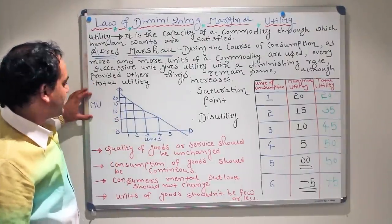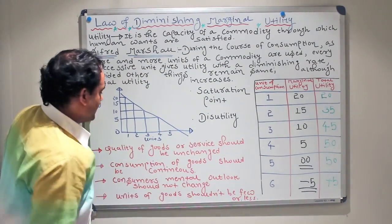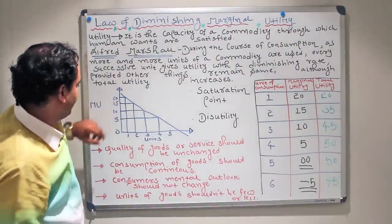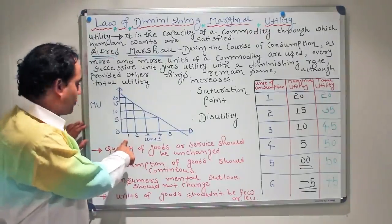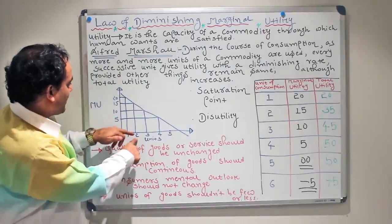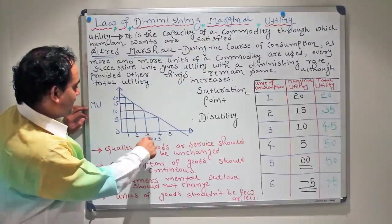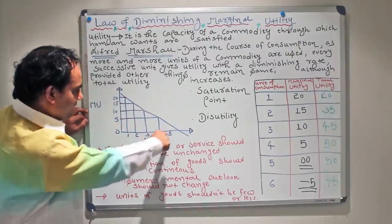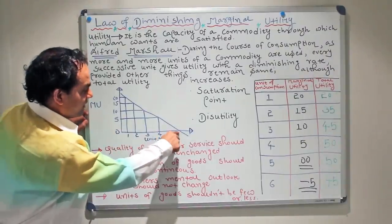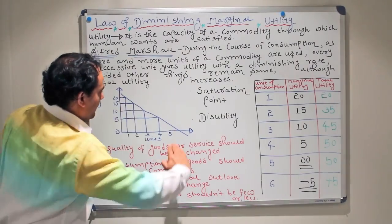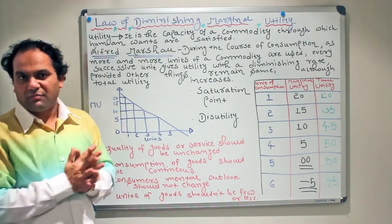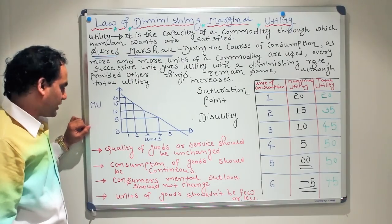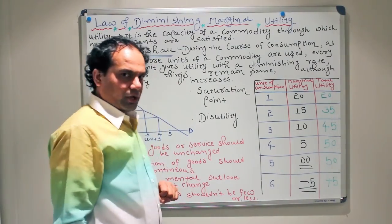Let's evaluate this from the diagram. On the vertical axis you have marginal utility; on the horizontal axis you have units — one, two, three, four, five, six. On the vertical axis you have values of 5, 10, 15, 20. The first glass gives 20 units of marginal utility, the second gives 15, the third gives 10, the fourth gives 5, the fifth gives zero, and at the sixth unit it is in the minus. So you will have a curve that looks more or less like a demand curve.